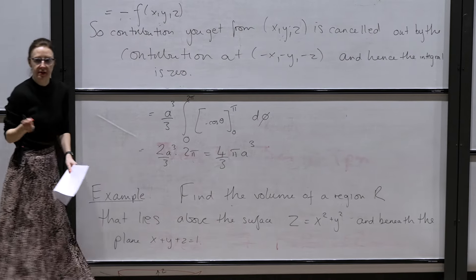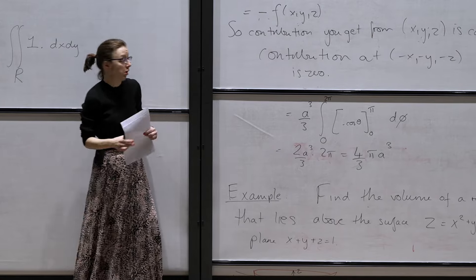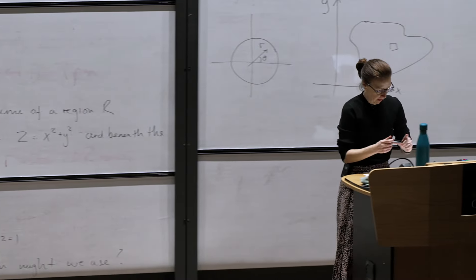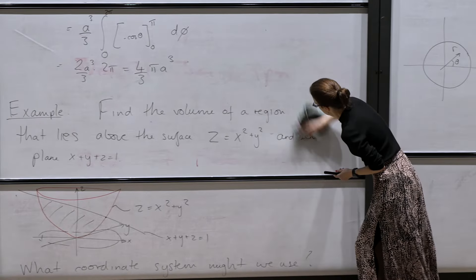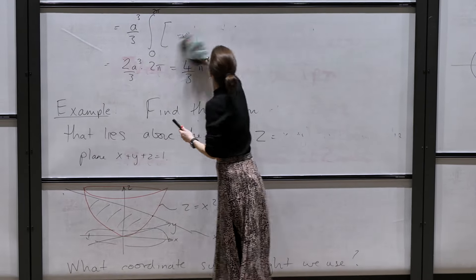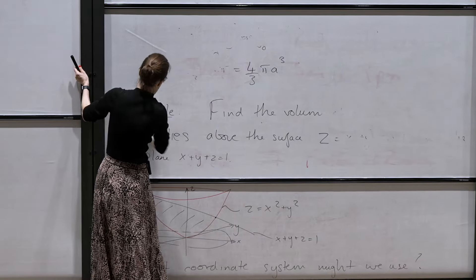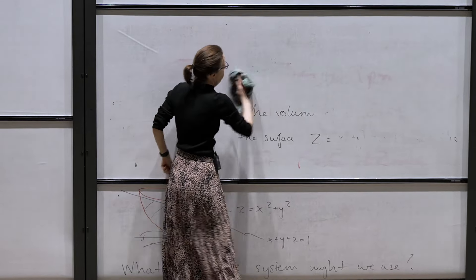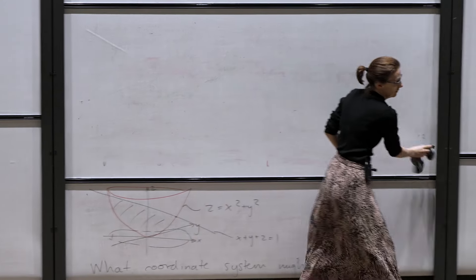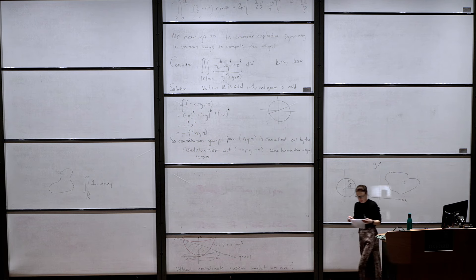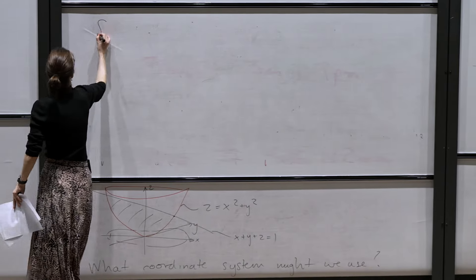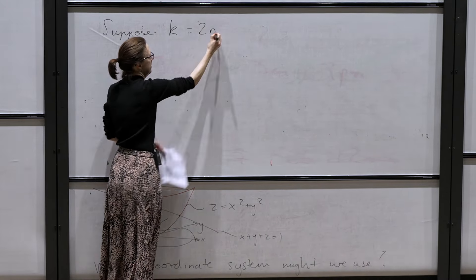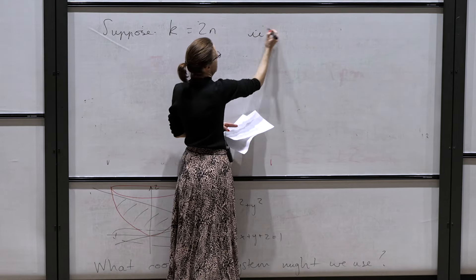That works because the integrand is odd and the domain is symmetric. It wouldn't work if the domain wasn't symmetric, because then you'd have leftover points giving a non-zero value. What about when k is even? If k is even, I can write k as 2n for some integer n.